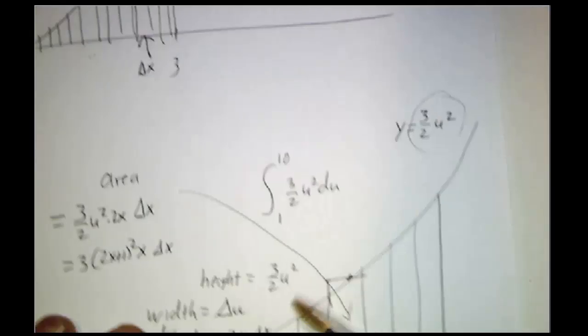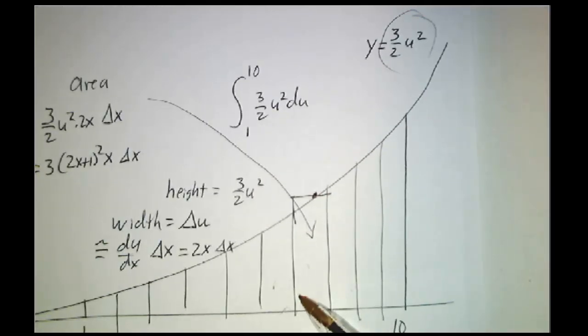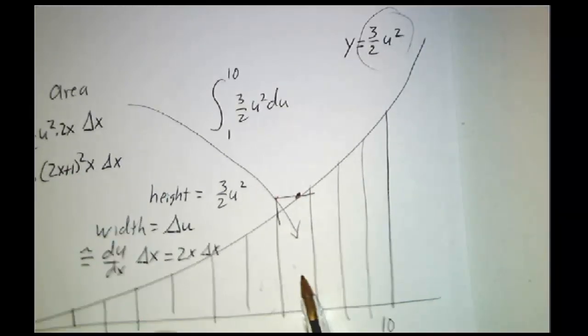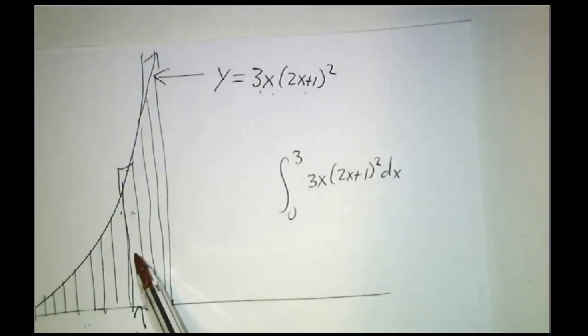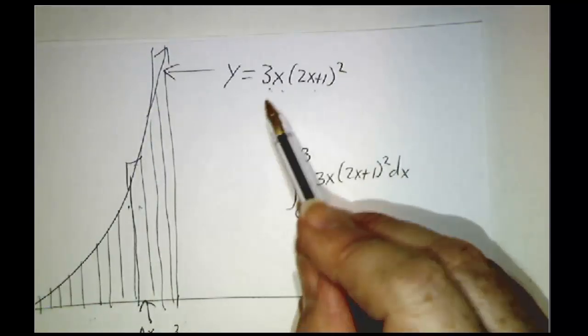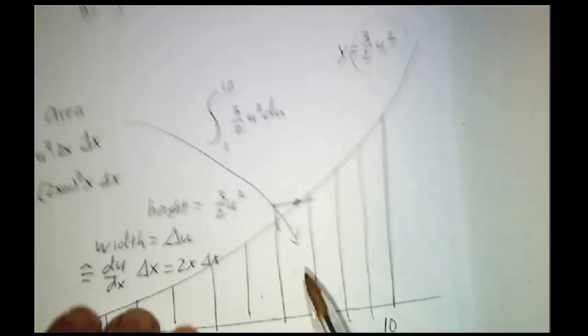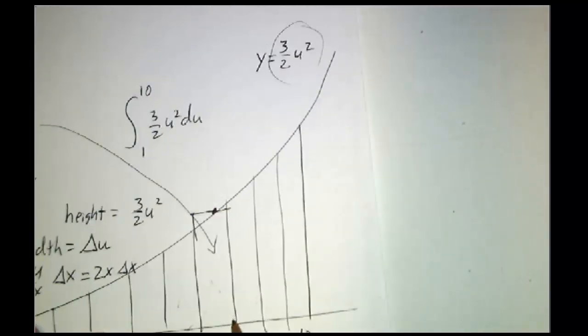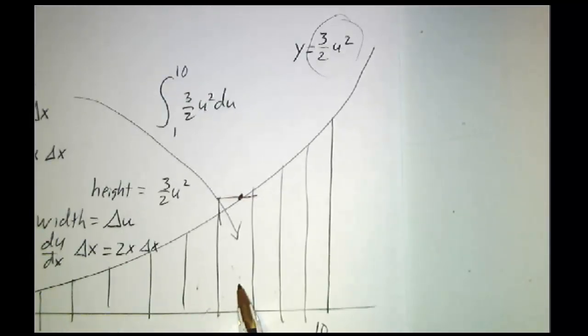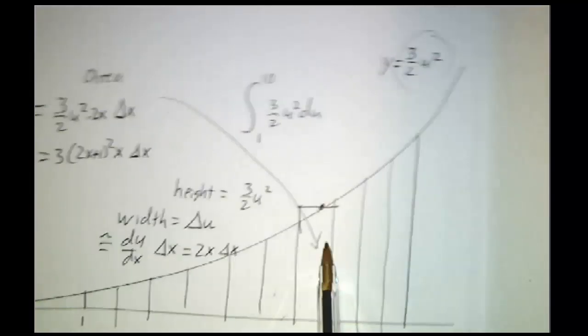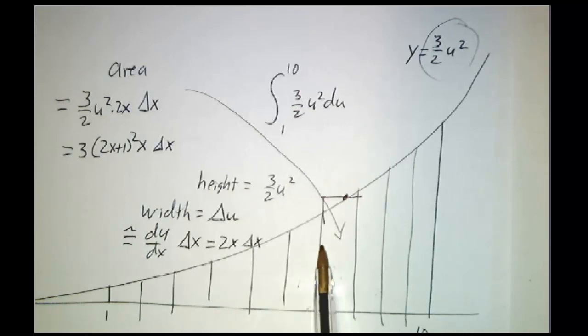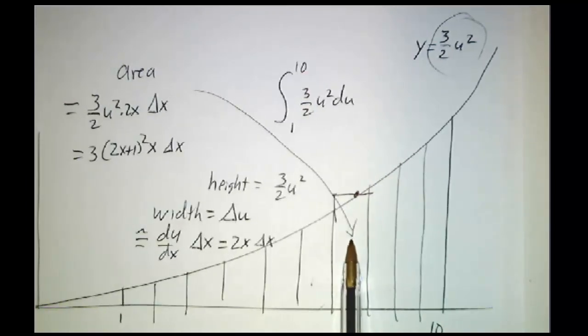These rectangles are not the same as these rectangles, but they have the same area. These rectangles are wider. These rectangles are taller. These rectangles have an extra factor of 2x in their height, these rectangles have an extra factor of 2x in their width. The rectangles have the same area. The sums have the same area. The limits of the sums have the same area. The integrals are the same.